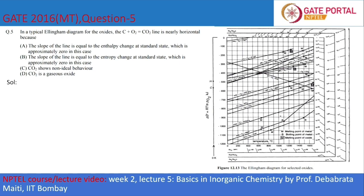Today in this video I will discuss this question from the GATE 2016 question paper. The question is: in a typical Ellingham diagram for the oxides, the C plus O₂ equals CO₂ line is nearly horizontal.